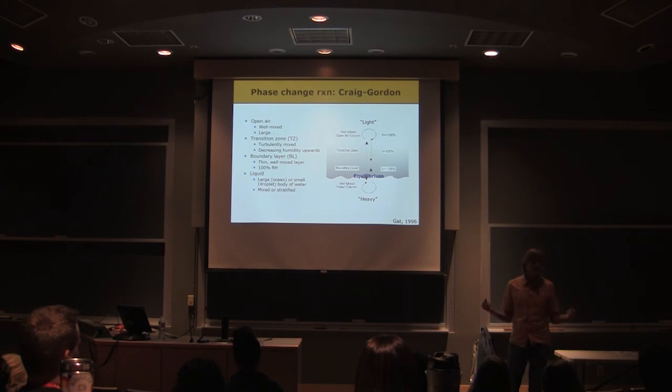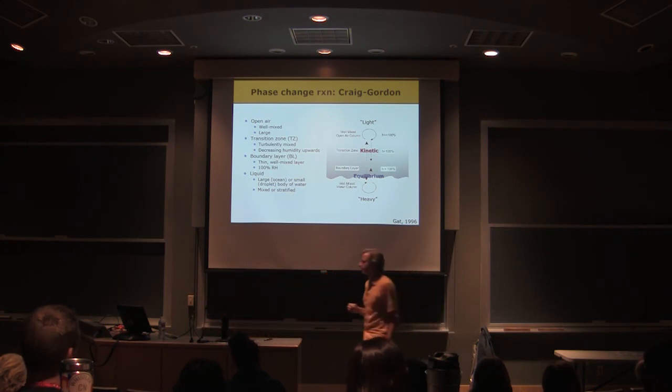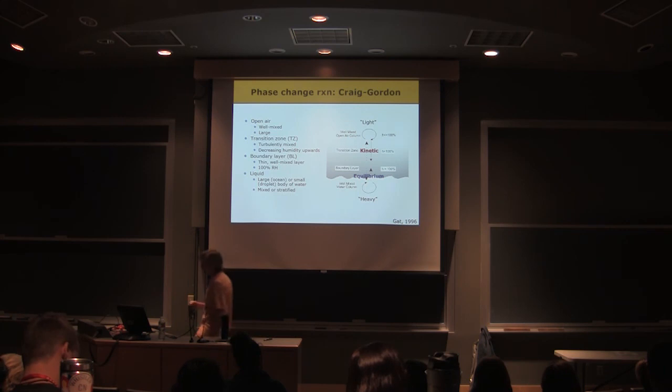And we get isotope effects associated with diffusion. What kind of fractionation is that? It's a kinetic fractionation. So we've got an imbalanced process. And so we have fractionation going on up there, but it's a different kind of fractionation. It's a kinetic process, driven by that diffusive gradient. And so we've got a combination of these two things going on.